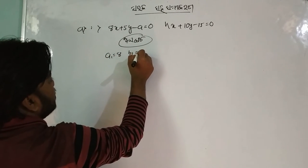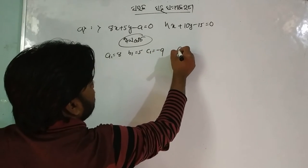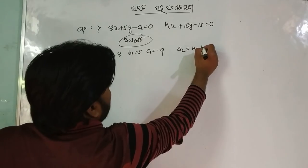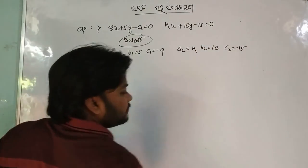b1 is equal to 5, c1 is equal to minus 9. a2 is equal to K, b2 is equal to 10, c2 is equal to minus 50.